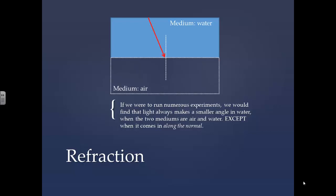If we were to run numerous experiments, we would find that light always makes a smaller angle in water when the two mediums are air and water, except when it comes in along the normal.